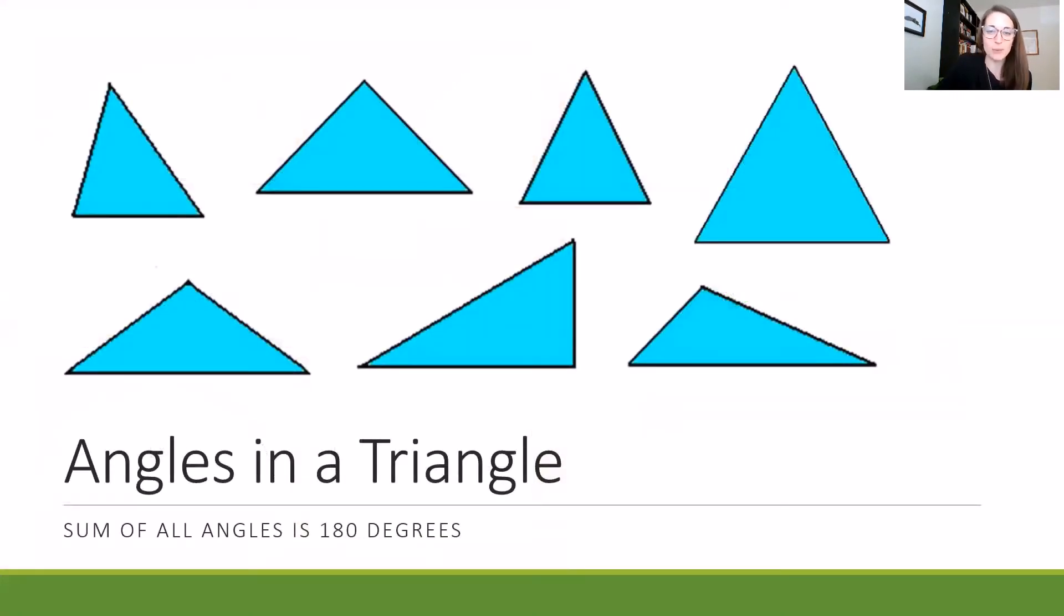For angles in a triangle, the important thing to remember is no matter what the triangle looks like, whether it looks like any of these on the screen or something else, the sum of all the angles is always going to be 180 degrees.